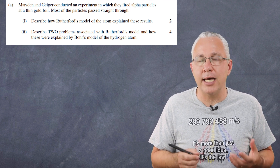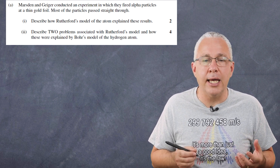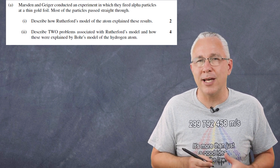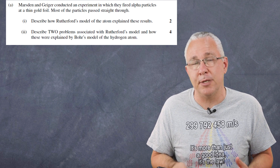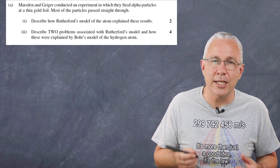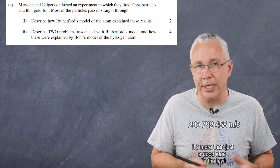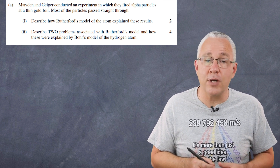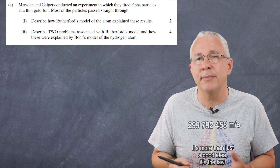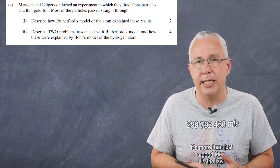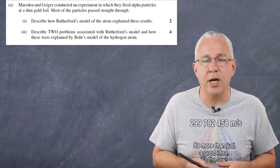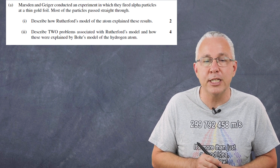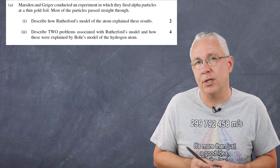This is referred to as Rutherford's gold foil experiment, with Marsden and Geiger doing a lot of the initial work and deserving some credit. The question first asks us to describe how Rutherford's model of the atom explained these results, and then to describe two problems associated with Rutherford's model and how these were explained by Bohr's model of the hydrogen atom.